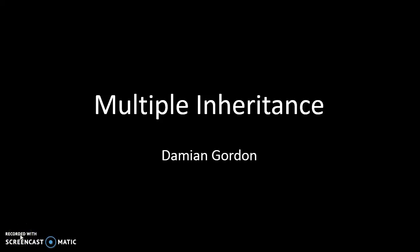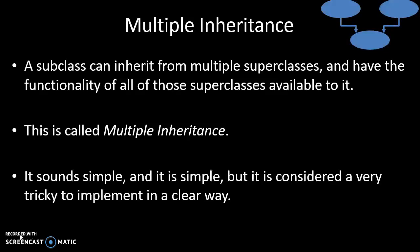Hello everybody, you're very welcome to this episode of Object-Oriented Programming. In this episode we're going to look at multiple inheritance. We've seen single inheritance already, or basic inheritance. Multiple inheritance simply means that instead of a class inheriting from another class, a class inherits from two other classes, or two superclasses.